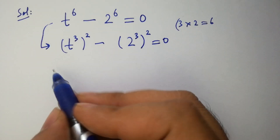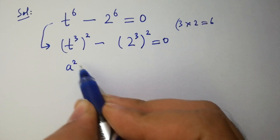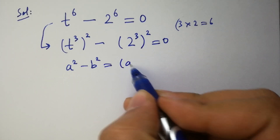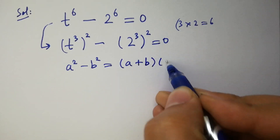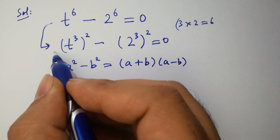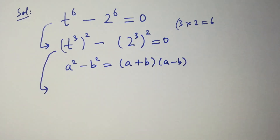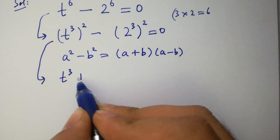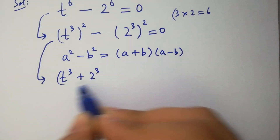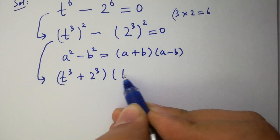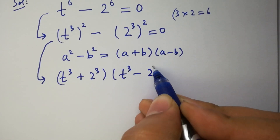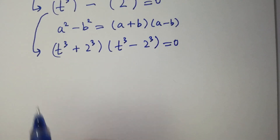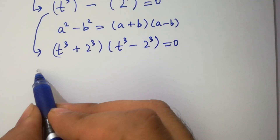As we know, a squared minus b squared equals a plus b times a minus b. Then we have t cubed plus 2 cubed, times t cubed minus 2 cubed, equal to 0. We have two cases here. Case 1: